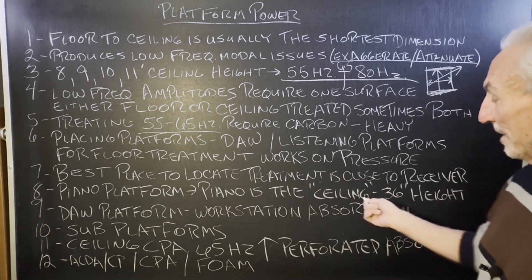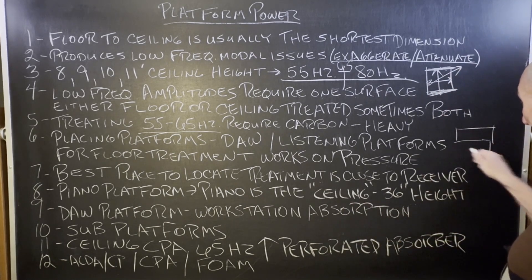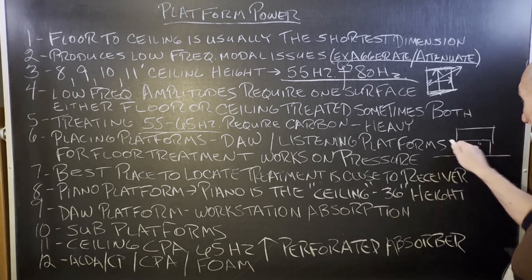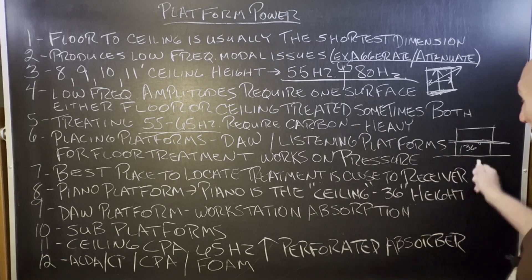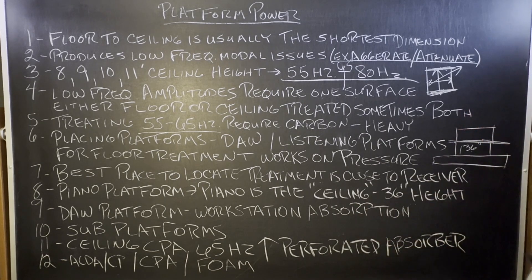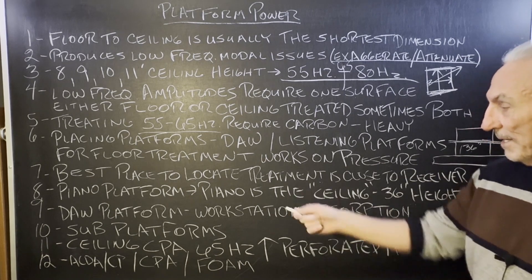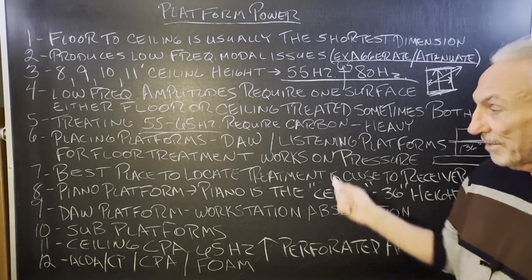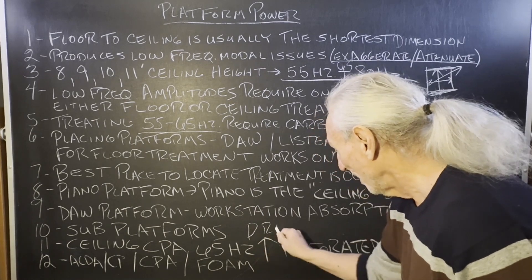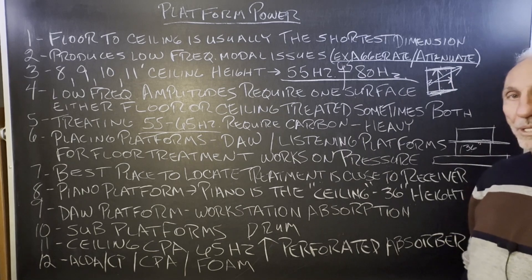The piano platform really is the ceiling, if you think about it. If you have the piano and there's the floor, that's 36 inches — so that really is the ceiling, and you've got a very small space there. So we treat it by putting the piano on a platform, which absorbs that excess energy. The DAW platform and drum platform work the same way. Sub platforms work the same way. They all work the same way because we're all trying to treat that floor-to-ceiling dimension — that's the issue.